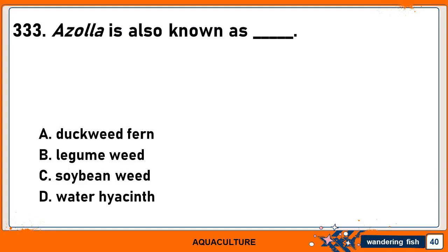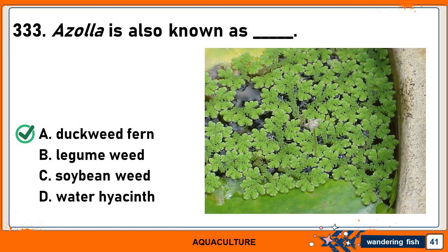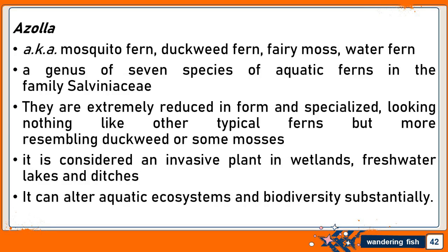What is the other name for Azolla? A. Duckweed Fern. B. Legume Weed. C. Soybean Weed. Or D. Water Hyacinth. The correct answer is A. Duckweed Fern. Azolla is commonly known as mosquito fern, duckweed fern, fairy moss, or water fern. It is a genus of seven species of aquatic ferns in the family Salviniaceae. It is considered an invasive plant in wetlands, freshwater lakes, and ditches, and can alter aquatic ecosystems and biodiversity substantially.